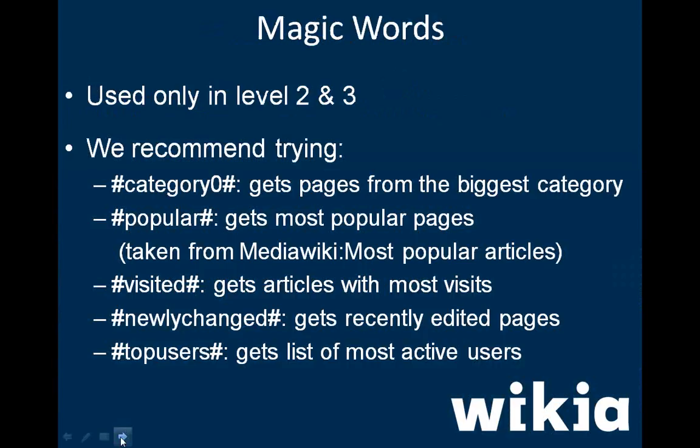Another trick you can use is magic words. A magic word is a symbol recognized by MediaWiki which triggers the software to do something special on the page. You can use these in your navigation to auto-populate some links — inserting links for whatever the magic word is calling, such as the most visited content or the most recently changed pages, automatically into the navigation. We recommend trying: the category magic word, which gets pages from the biggest category; the popular magic word, which grabs the most popular pages; most visited; newly changed; and top users, which lists your most active contributors.